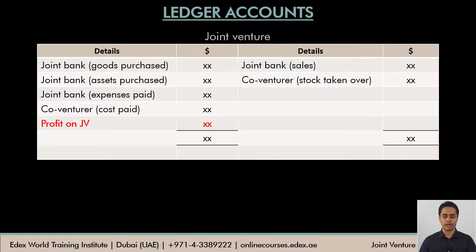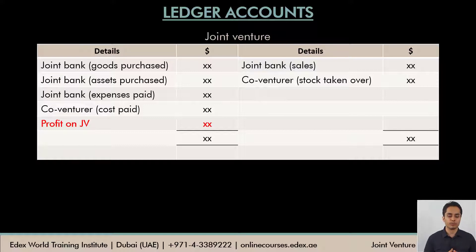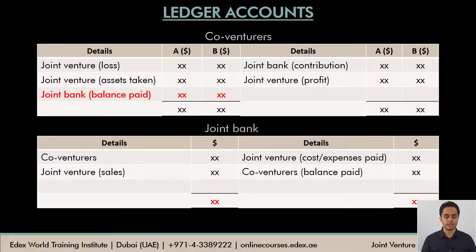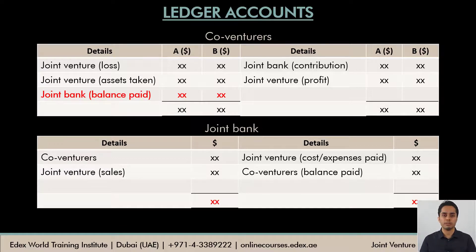Looking at the ledger account formats: the joint venture account has all goods purchased, expenses, and assets on the debit side, and sales, other income, gains, and closing stock taken by co-venturers on the credit side. The co-venturers account has contributions and profit on the credit side; assets or stock taken over, any loss, and final payments on the debit side. The joint bank account must balance — both sides equal — since these ledger accounts are simply transfers from the journal entries already discussed.